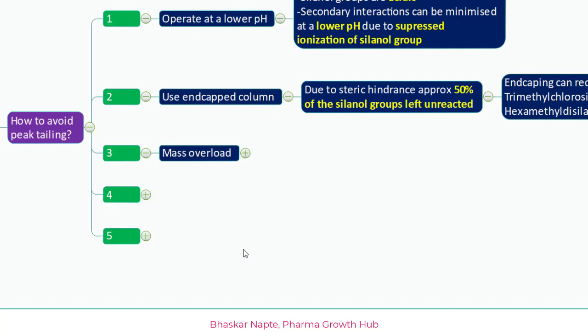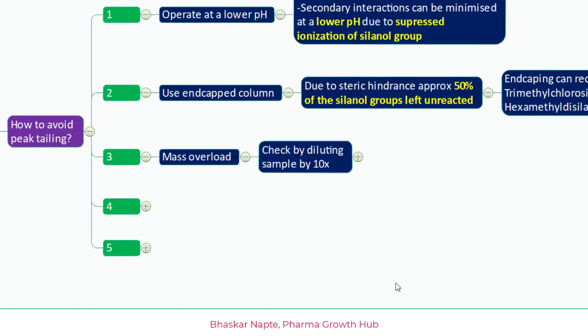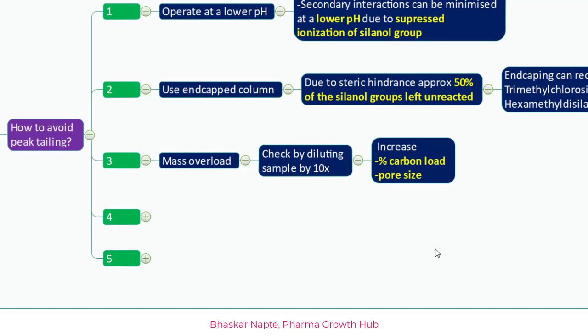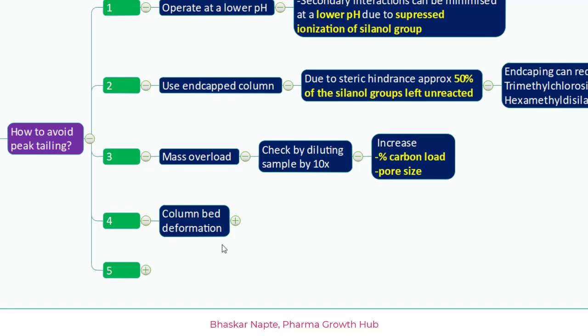The third important point is mass overload — if your injection volume or sample concentration is very high, your peak can tail. To assess whether mass overload is the reason, dilute your sample 10x: if it is 1000 ppm, make it 100 ppm, then inject. If the peak tailing is reduced, your earlier tailing was due to mass overload. If you cannot reduce the mass, consider increasing the percent carbon load or pore size to enhance column loading capacity.